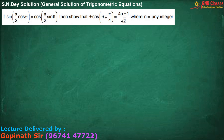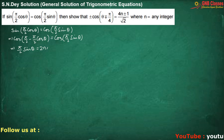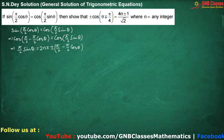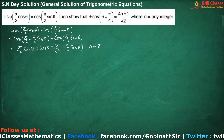In this problem we have been given the expression. What I'm doing here is writing sine θ as cos(90° - θ). Now when cos θ equals cos α, θ can be written as 2nπ ± α, where n belongs to any integer.